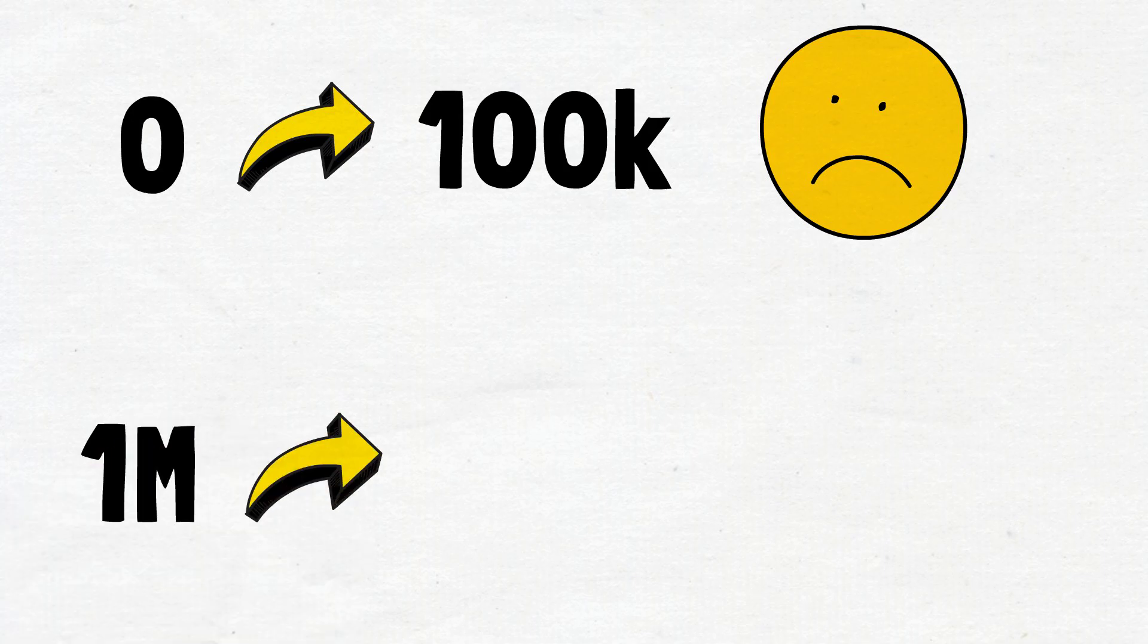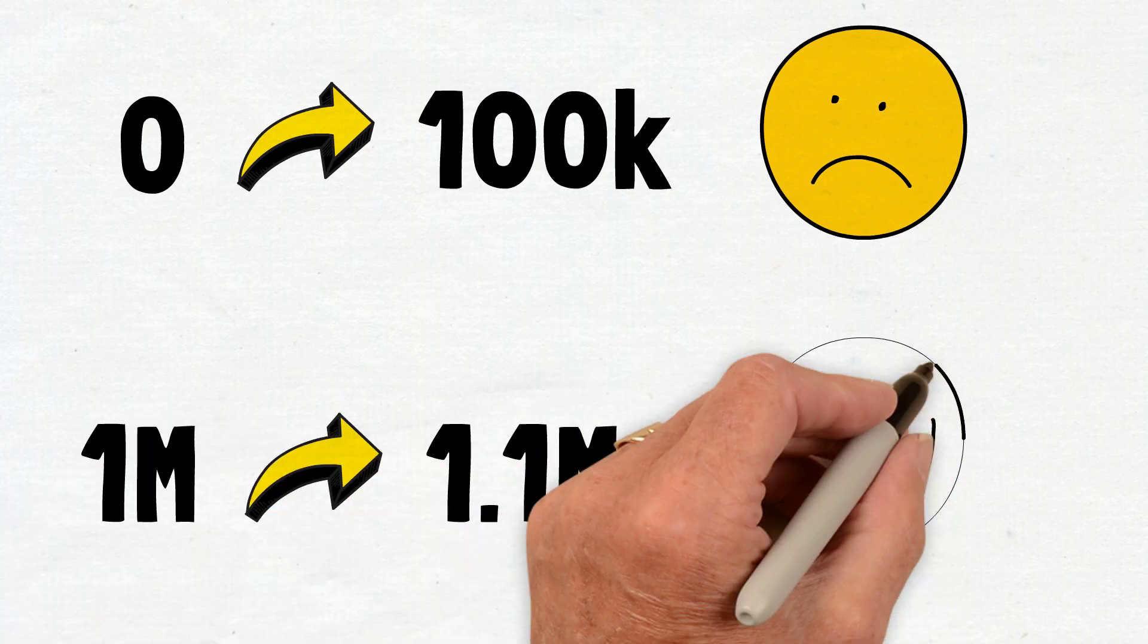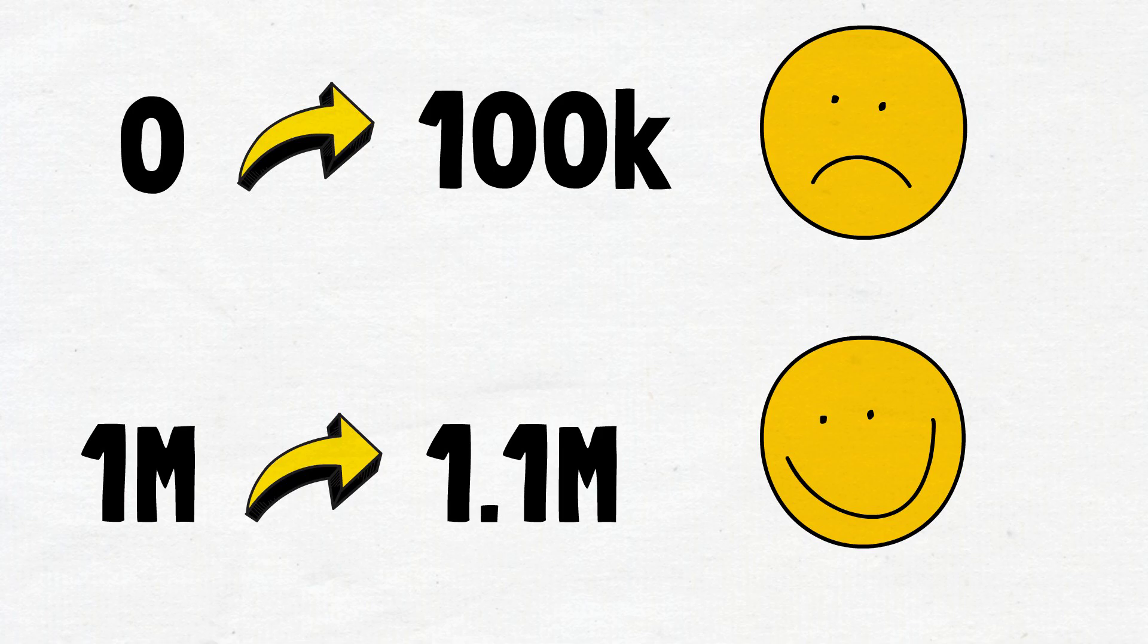Moving from 1 million to 1.1 million is comparatively easy as you have 1 million earning you returns each day. So if the first 100k is as hard to save as it seems, what steps can we take to make this period easier and get us started on an exciting wealth building journey over time?